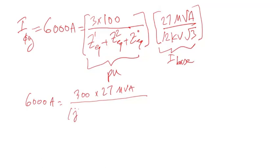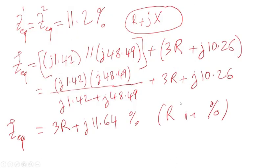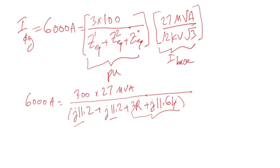The positive sequence impedance is j11.2%, the negative sequence is also j11.2%, and the zero sequence — as I calculated — is 3R plus j11.64%. This gives the full sum of the equivalent impedances in the denominator, multiplied by 12 kV times the square root of 3 on the right-hand side.